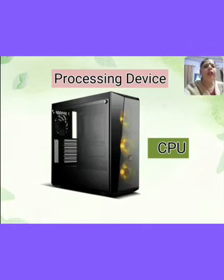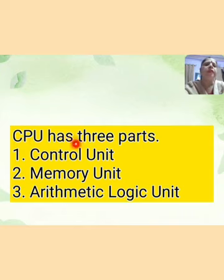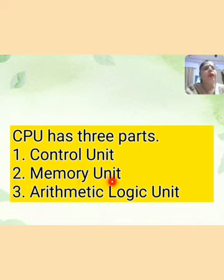Next is processing device. There is only one processing device in a computer system, and that is CPU. It is also called the brain of the computer. In our computer system, there is only one processing device — the CPU — and we also call it the brain of the computer. CPU has three parts. First is control unit.